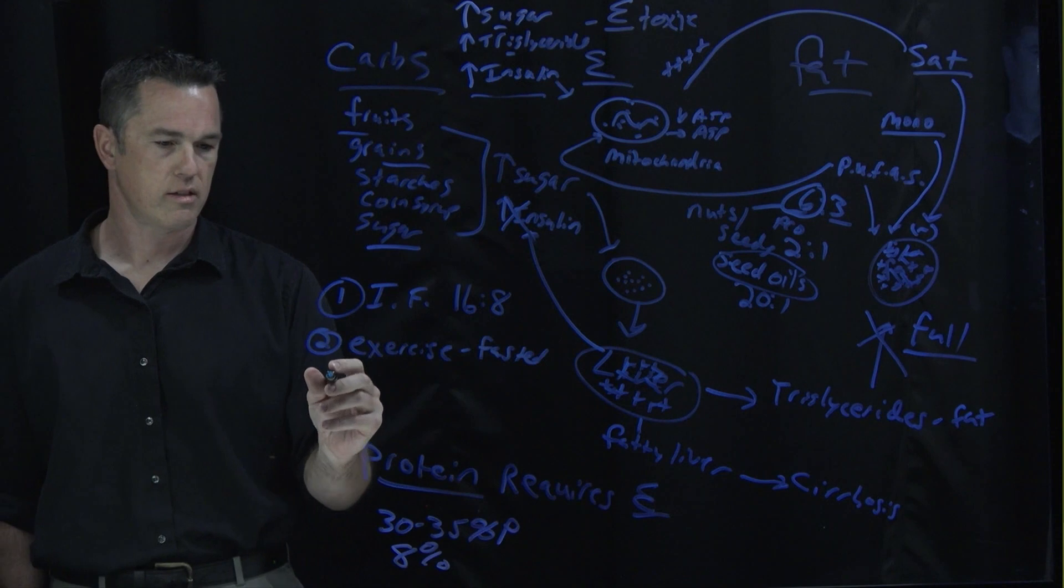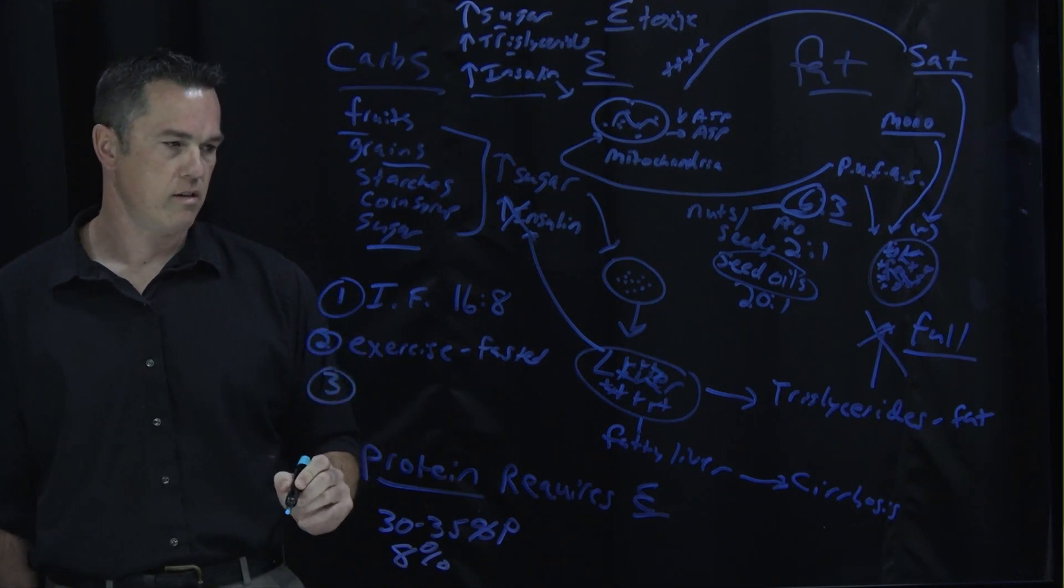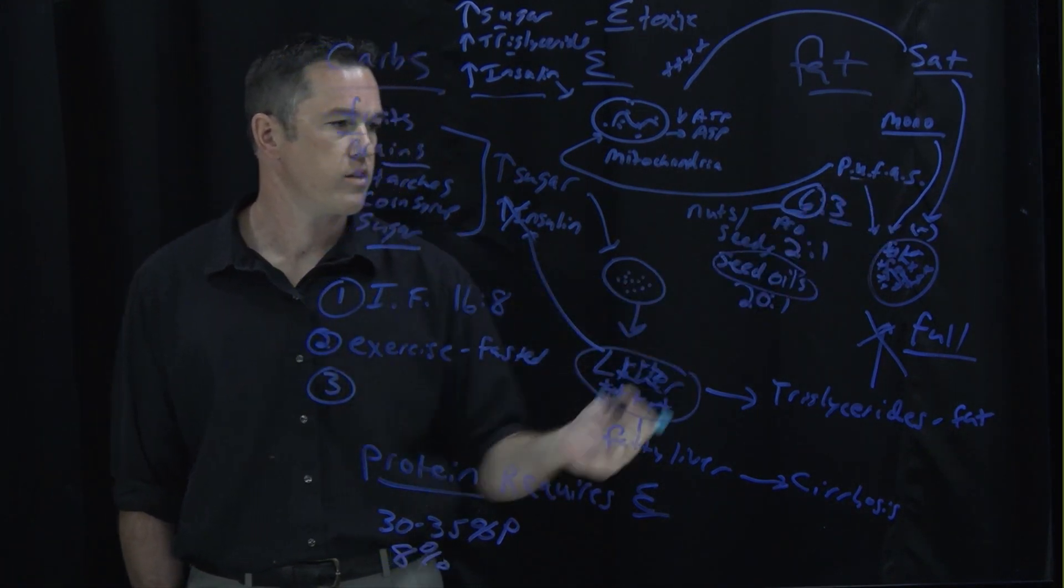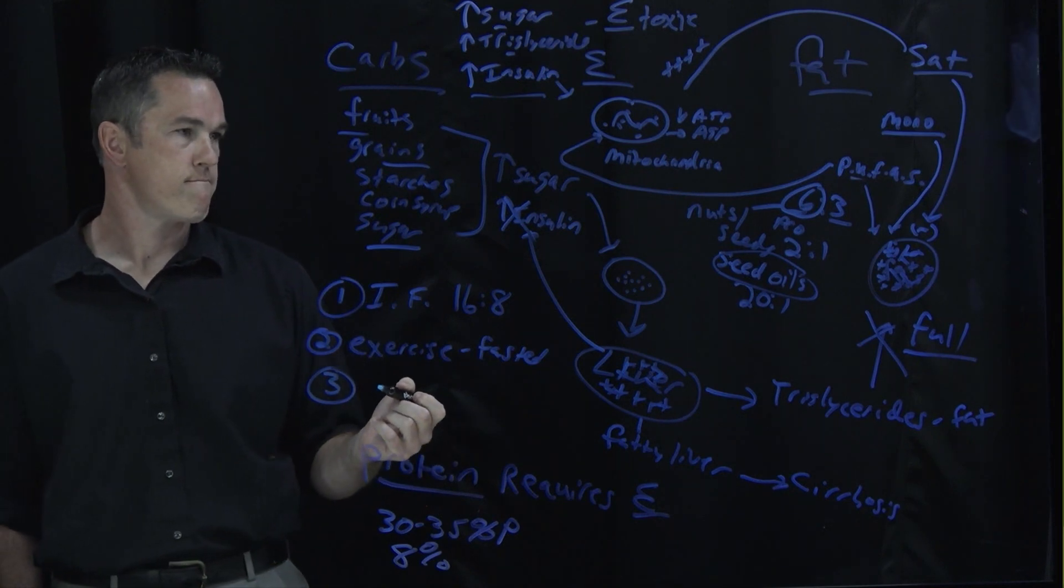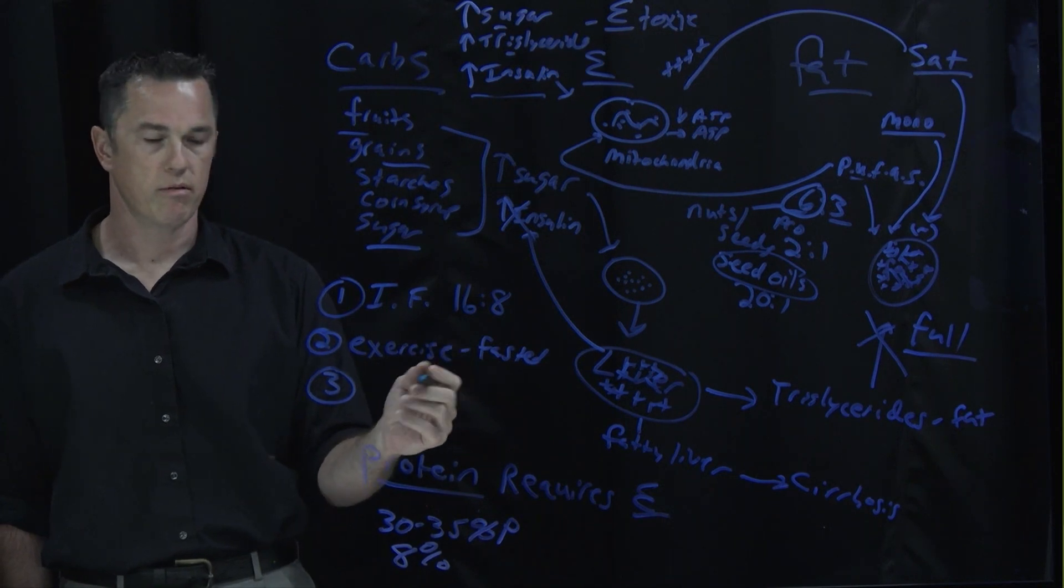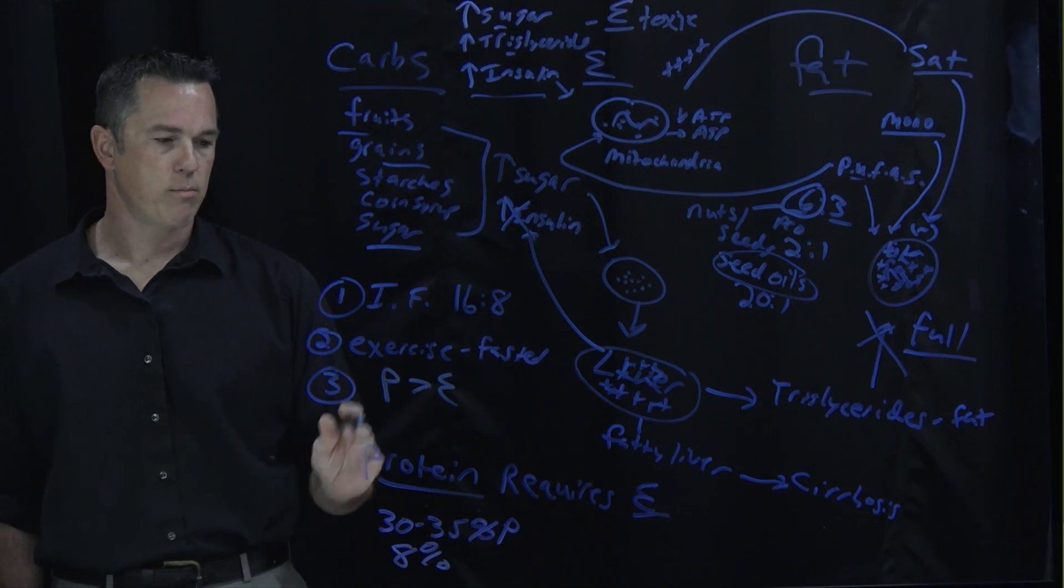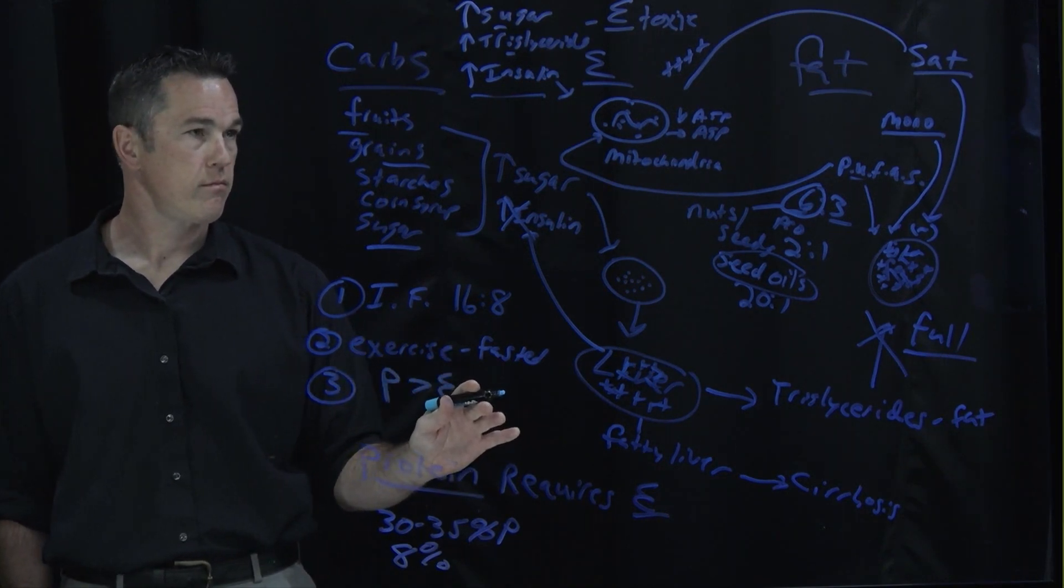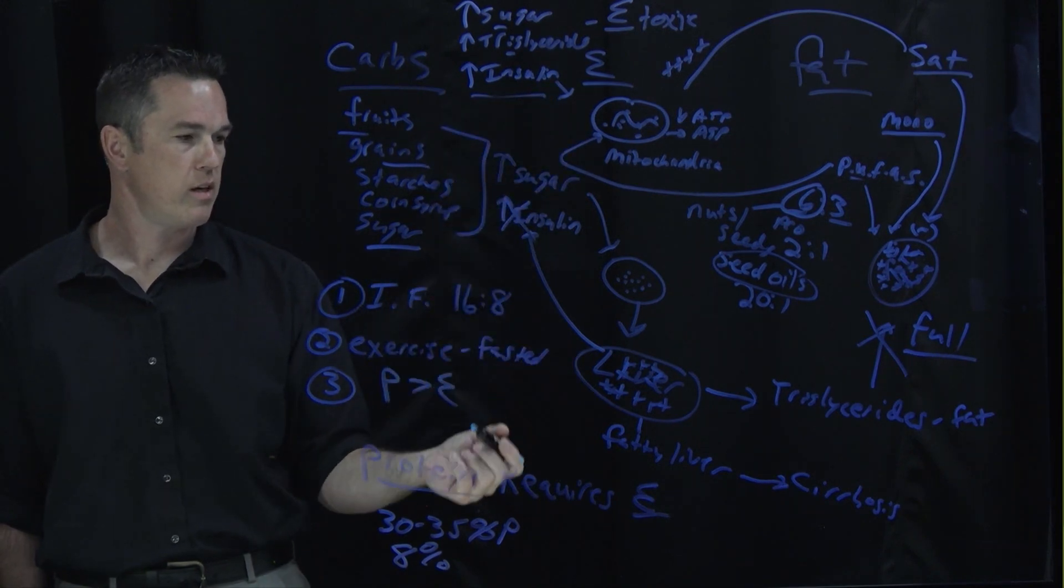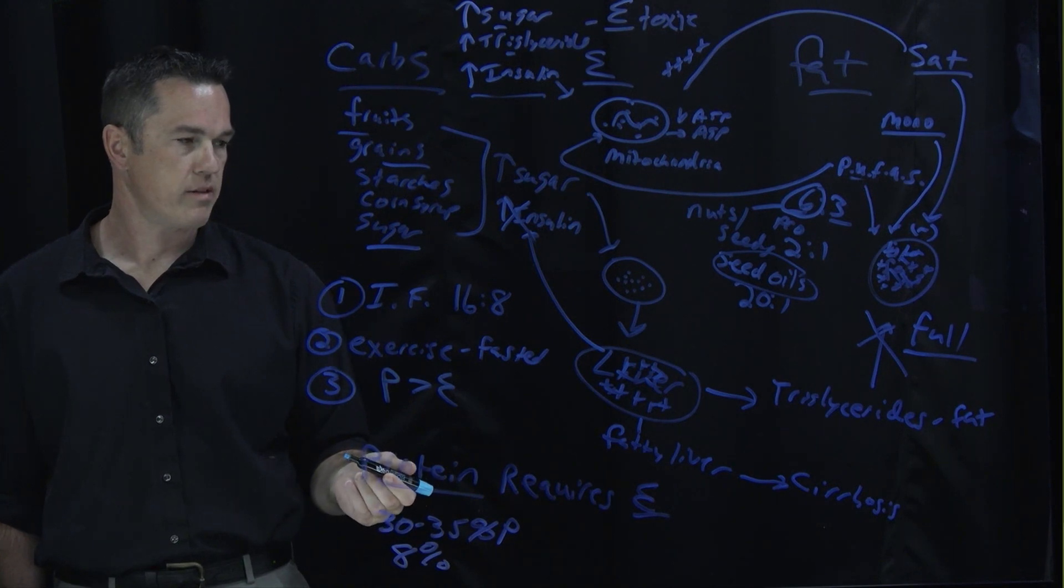And then the third thing is, alright, when it's time to eat, what should I eat? Well, you don't want to eat carbs. You definitely don't want to eat a bunch of polyunsaturated fats. But the solution is actually simple. You just want to eat more protein than energy, right? If you eat more protein than energy, then your body's forced to burn the energy that's floating around in your blood. Pull the energy out of your organs and repair itself.